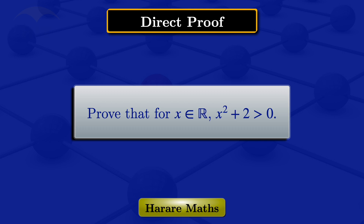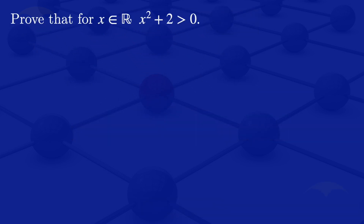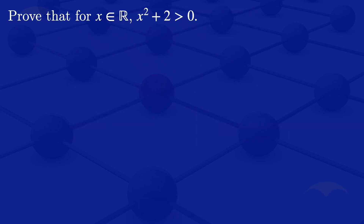In this video I'm going to prove that for any real number x, x squared plus 2 is greater than 0. To prove this, we know that if we take any real number and square it, the result is greater than or equal to 0. So for all x which are real numbers, x squared is greater than or equal to 0.